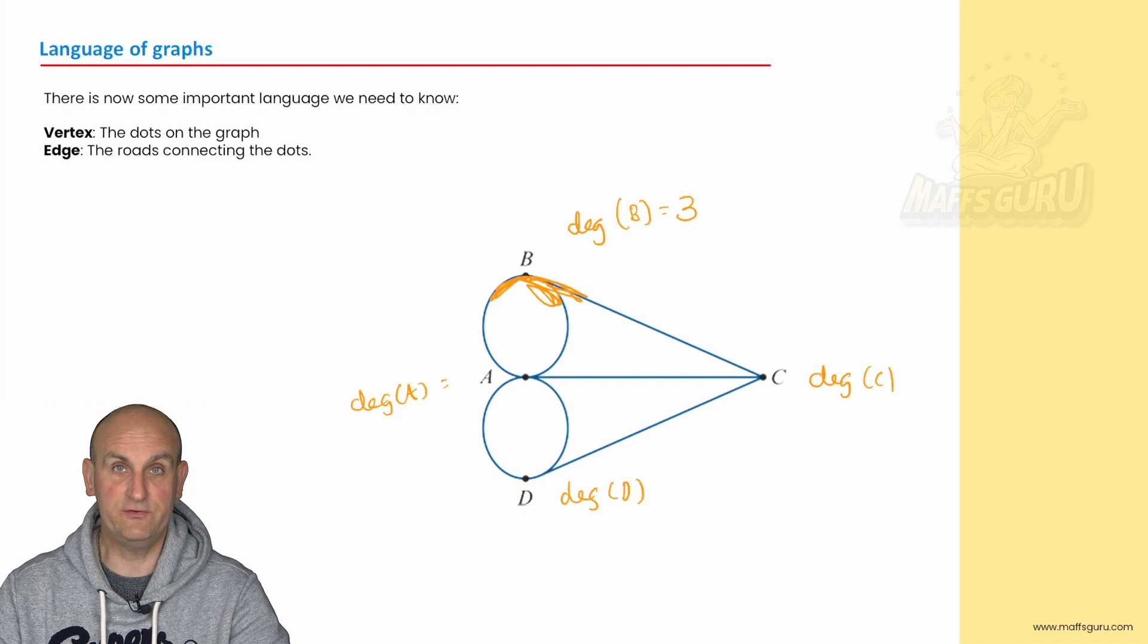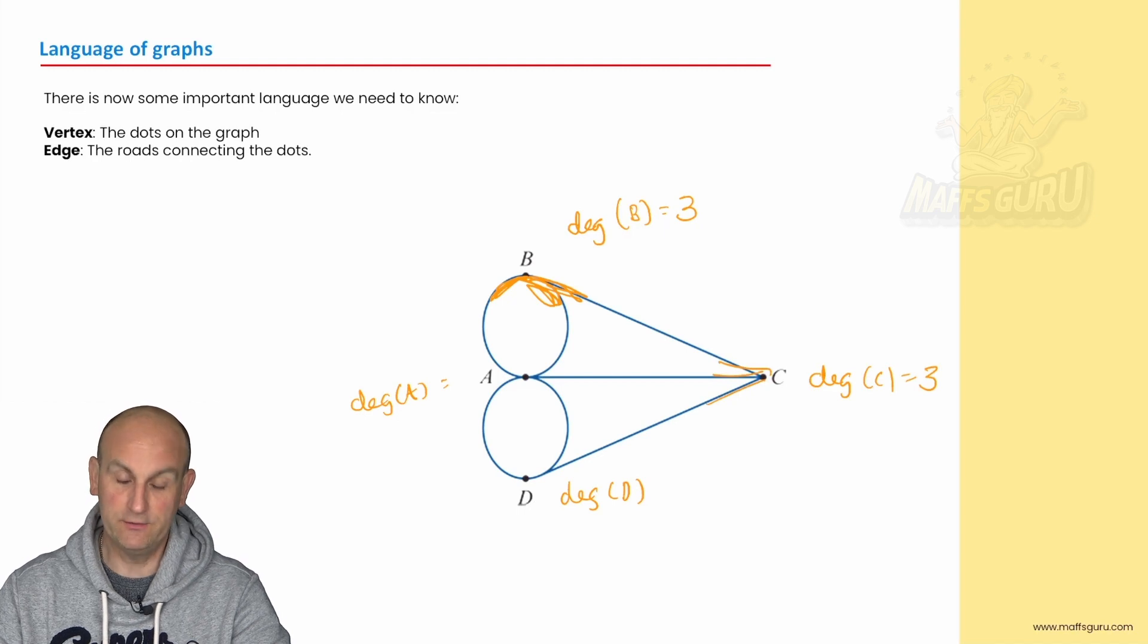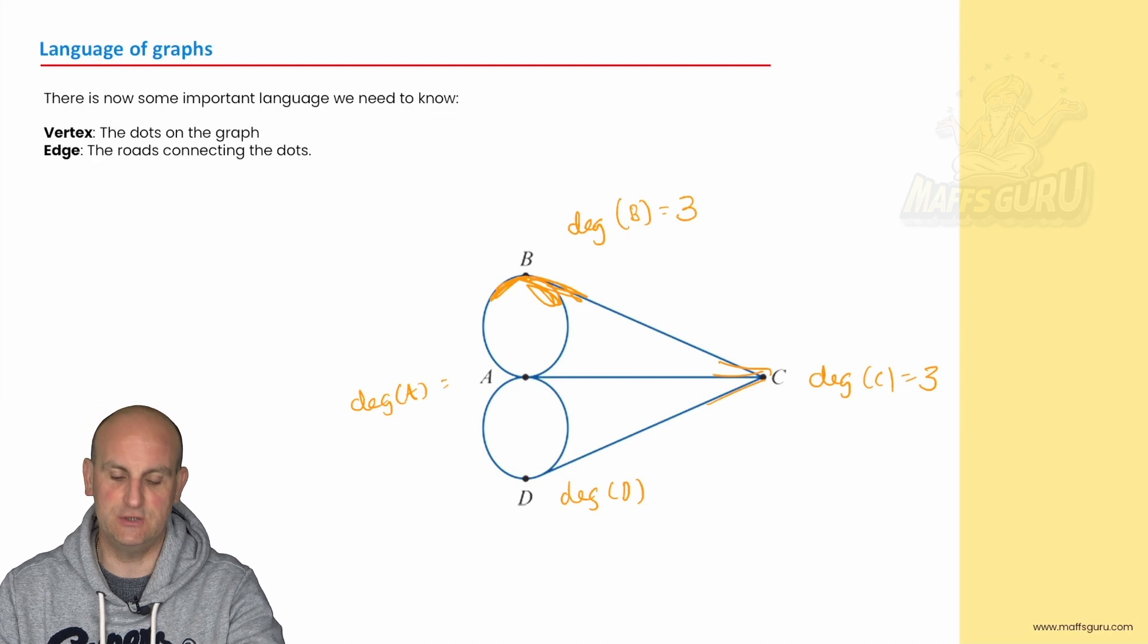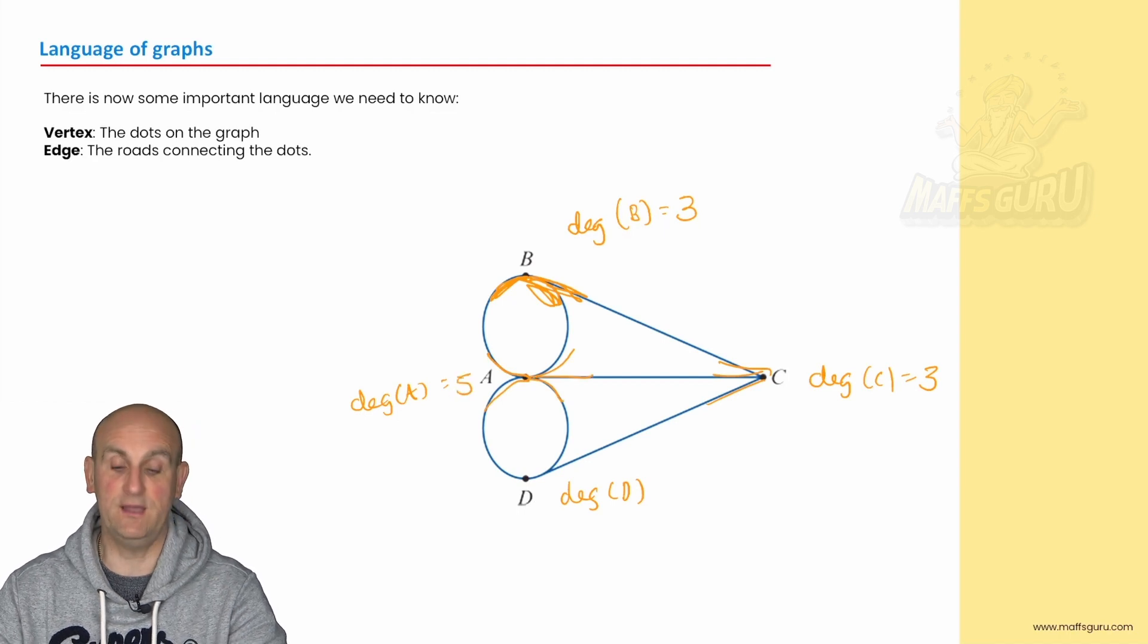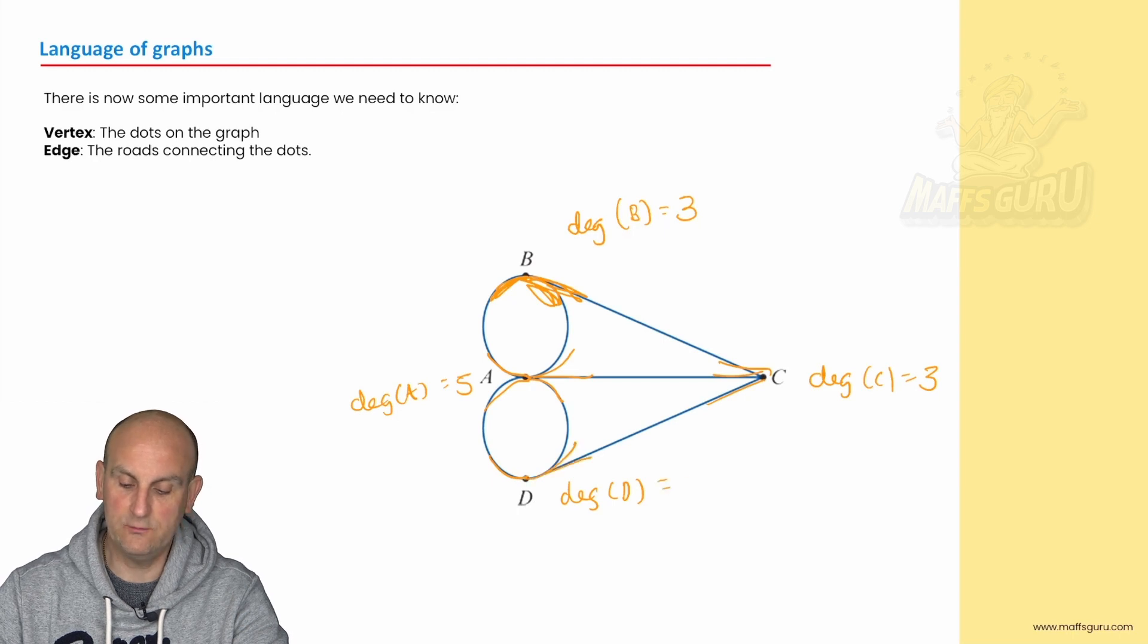Okay what about the degree of C? Well again we've got one, two, three going in there. There is three going in. The degree of A. Flipping it that looks a lot but again remember think of it as roads going into or out of. There's one coming in there, one there, one there, one there and there's one there. So that would then have degree five. And then this one here one, two, three and that was degree three.